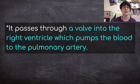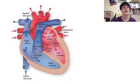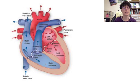The blood passes through a valve into the right ventricle, which pumps the blood to the pulmonary artery. The diagram is blue because this is oxygen-poor, deoxygenated blood. It goes through this valve into the right ventricle — ventricles are the pumping part of the heart — and it pumps that blood through the pulmonary valve up to the pulmonary artery.